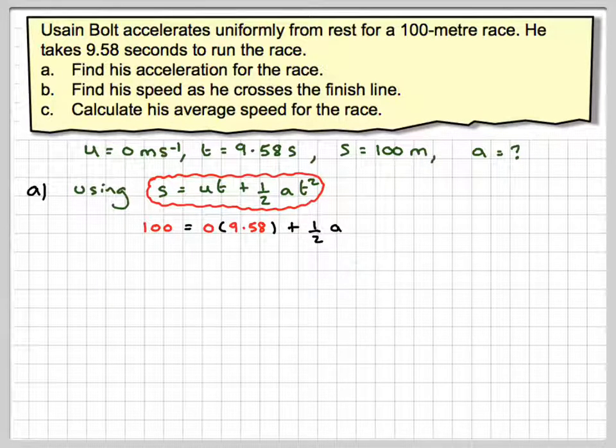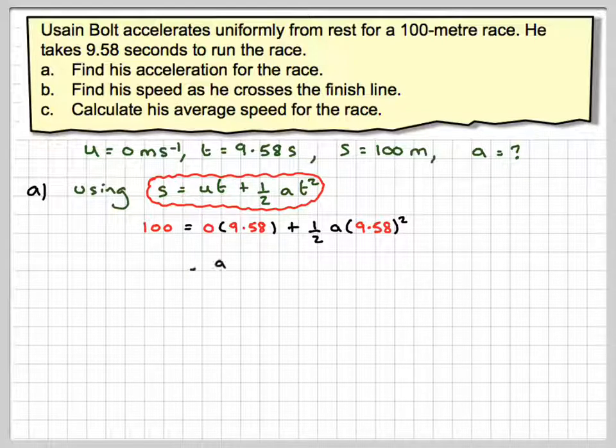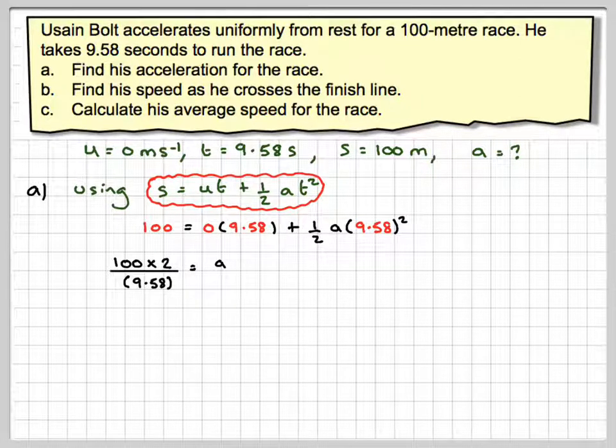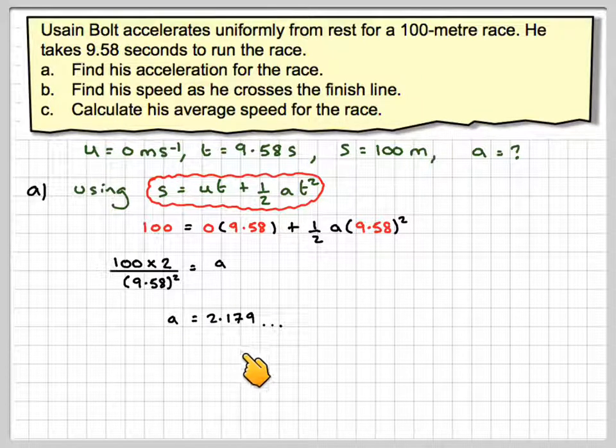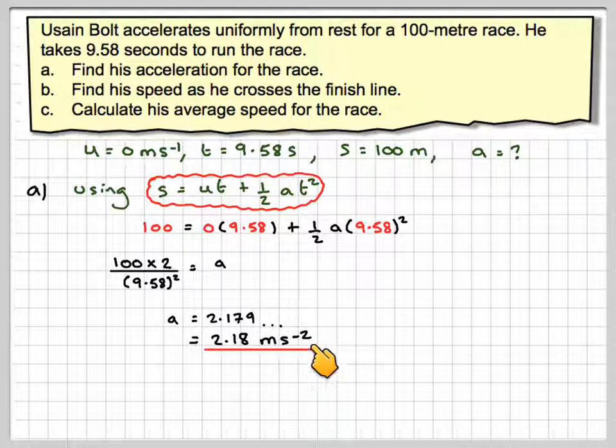plus one-half times a times 9.58 squared. That gives 100 times 2 divided by 9.58 squared. The acceleration is 2.179, which rounds to 2.18 meters per second squared.